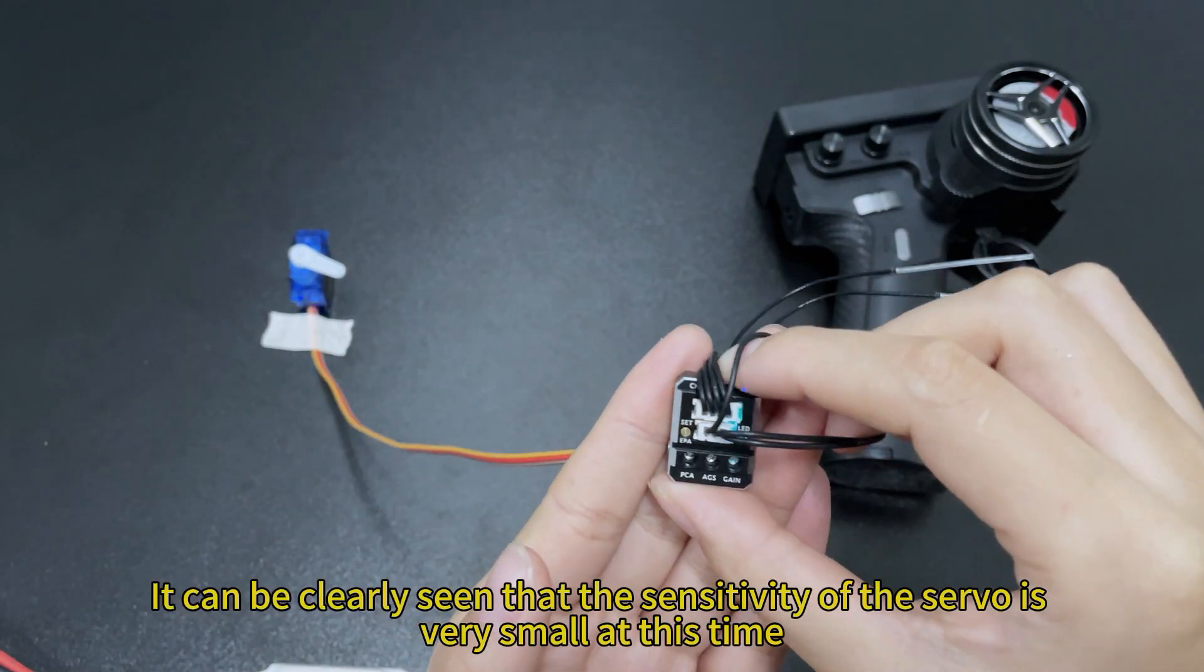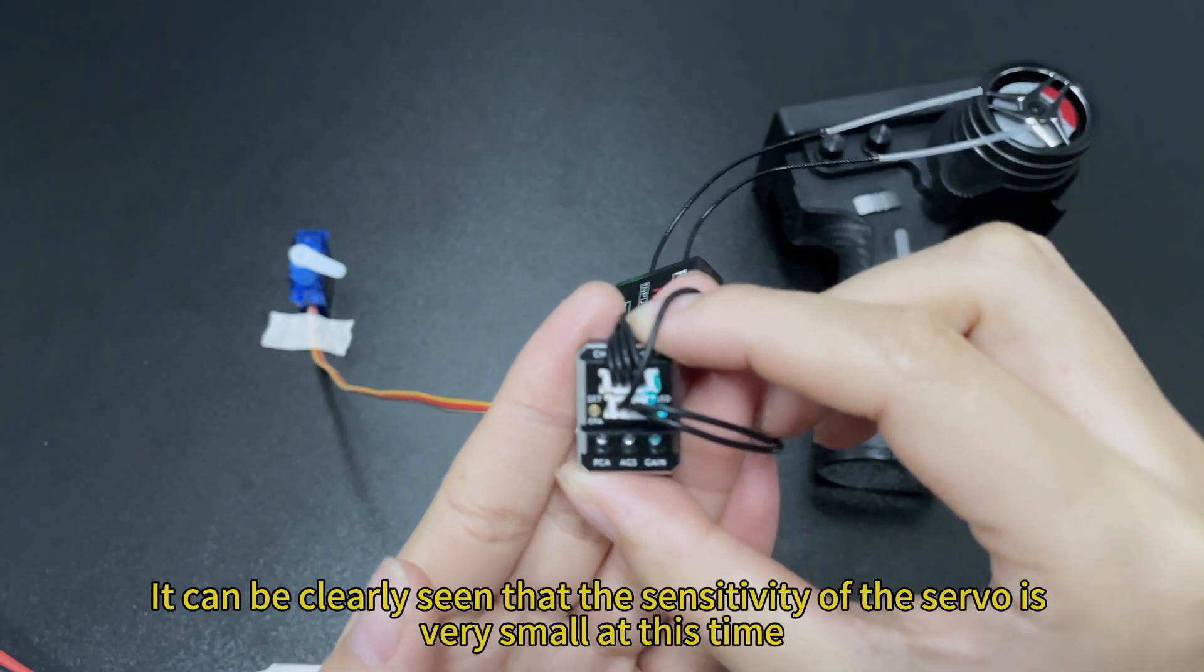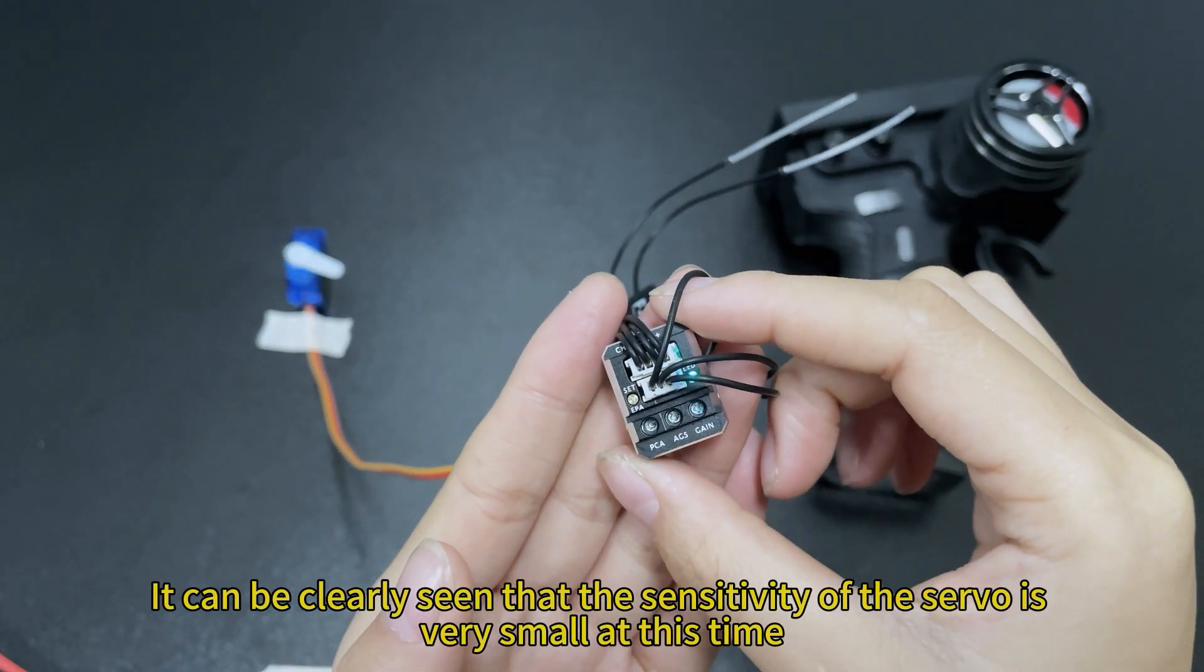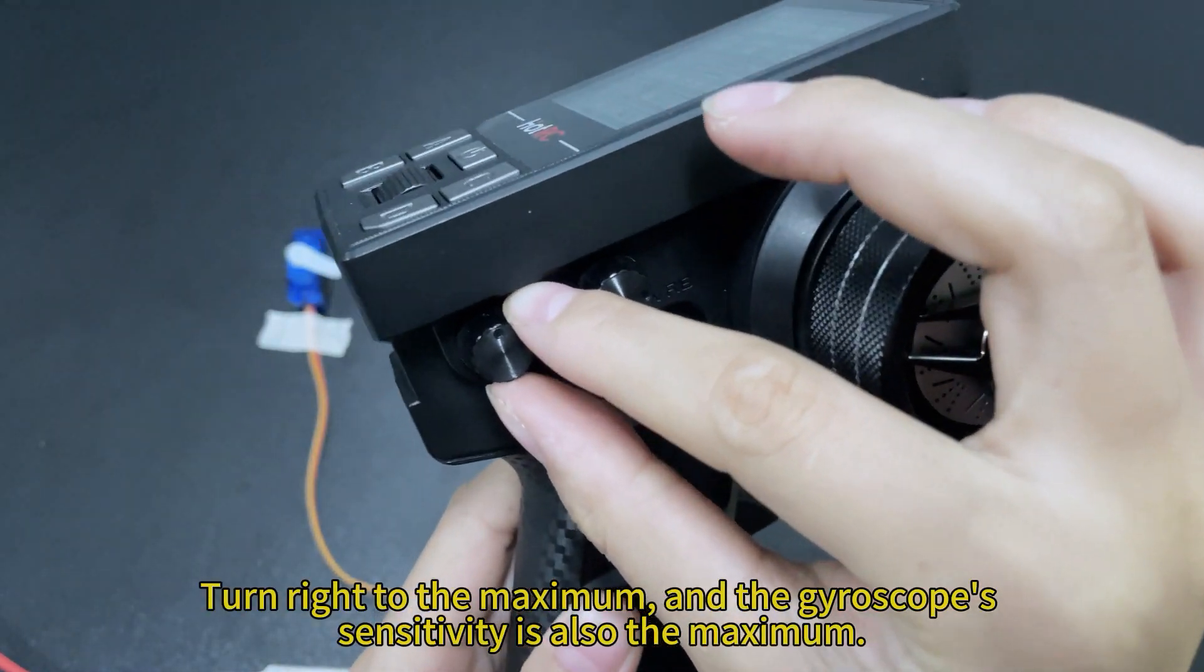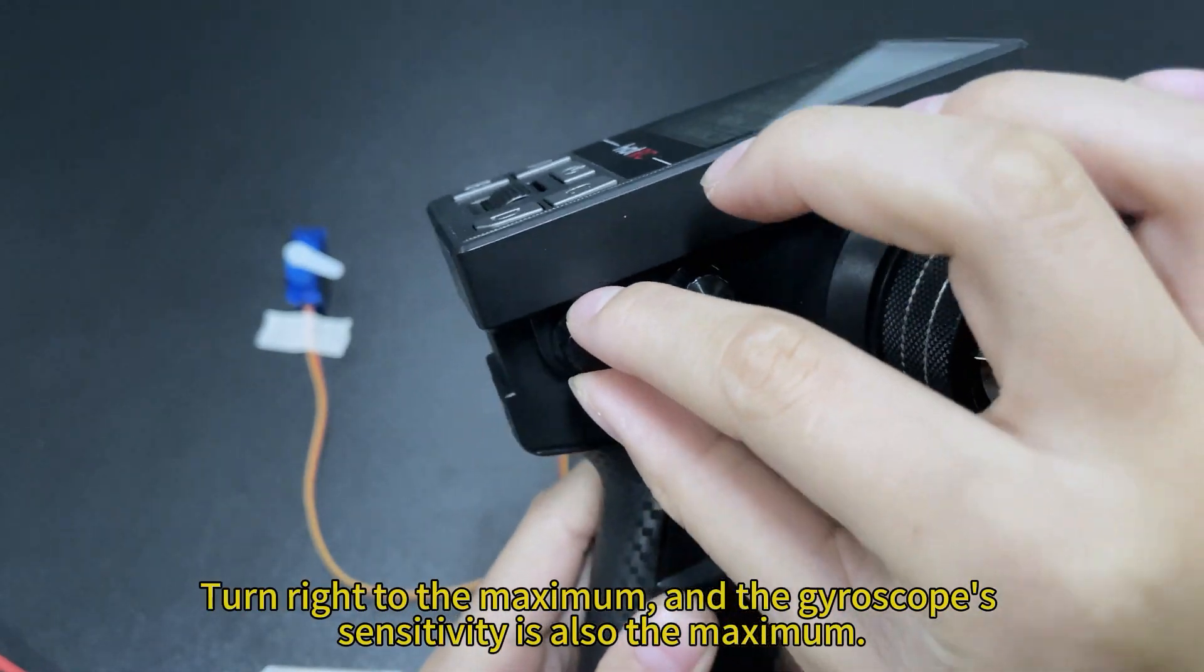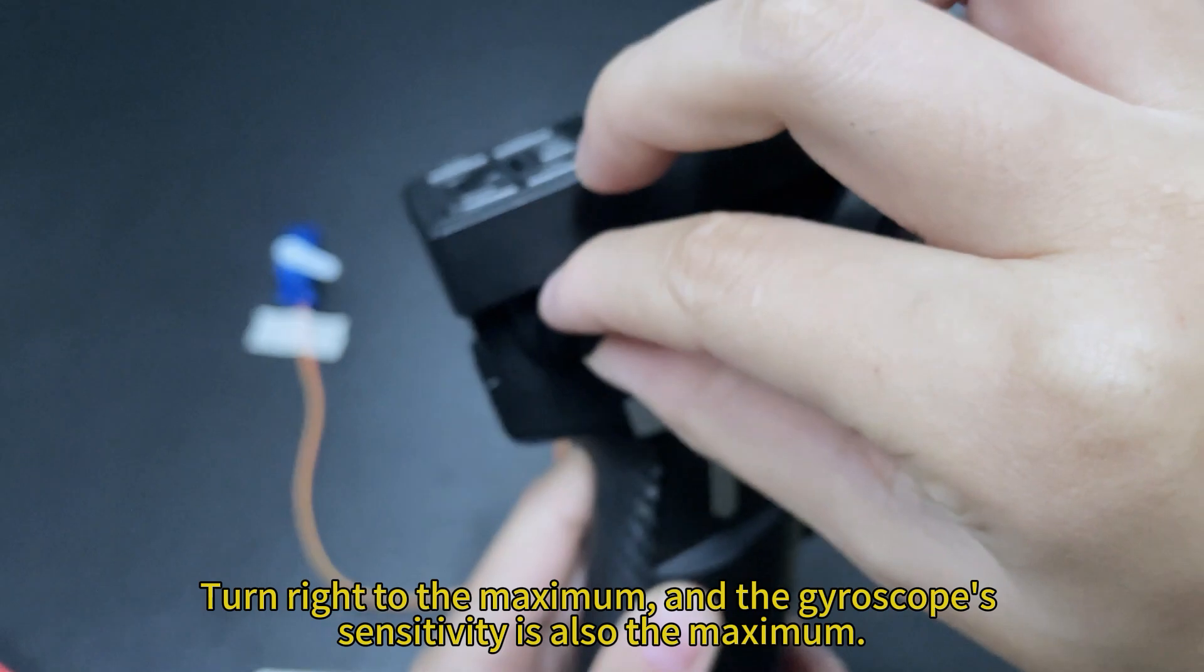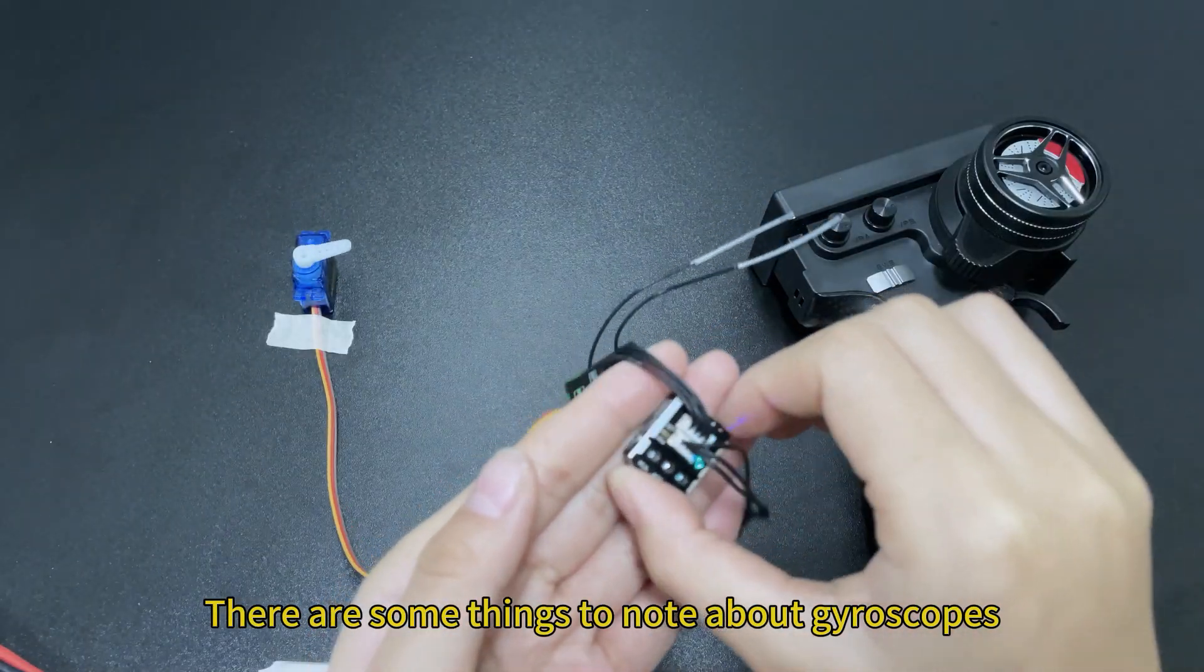It can be clearly seen that the sensitivity of the servo is very small at this time. Basically no reaction. Turn right to the maximum and the gyroscope's sensitivity is also the maximum.